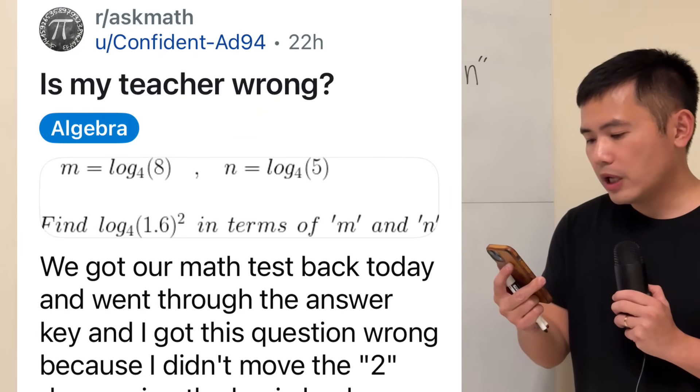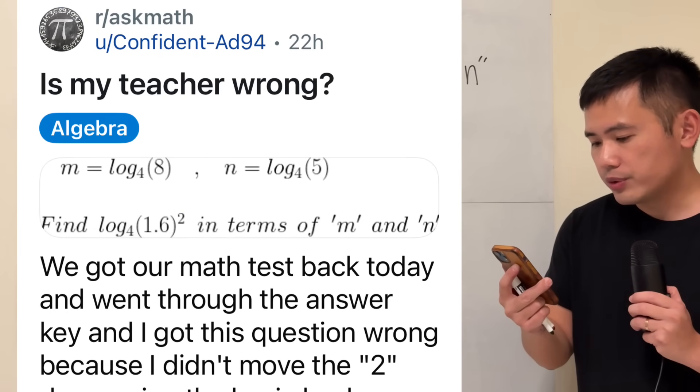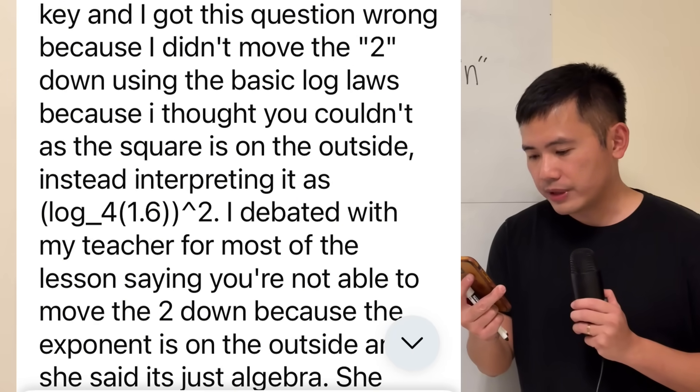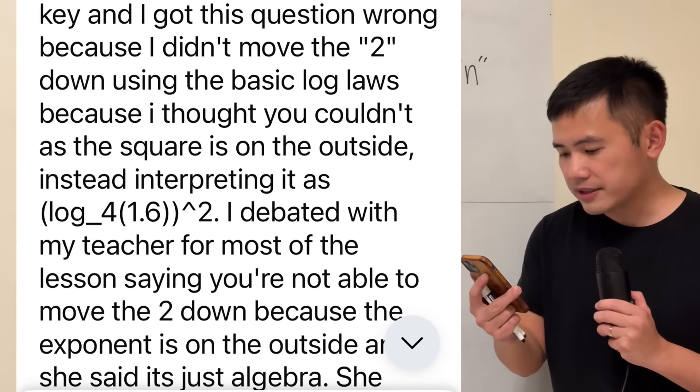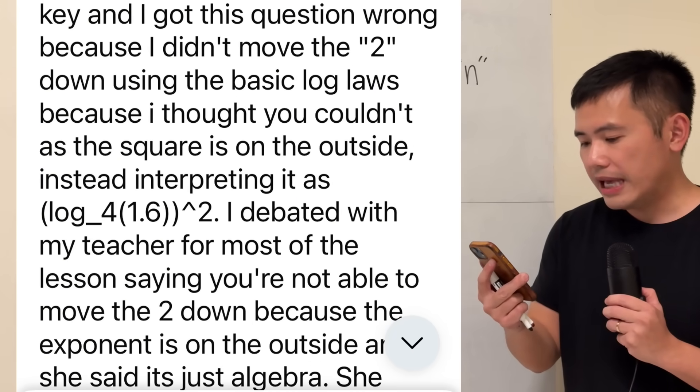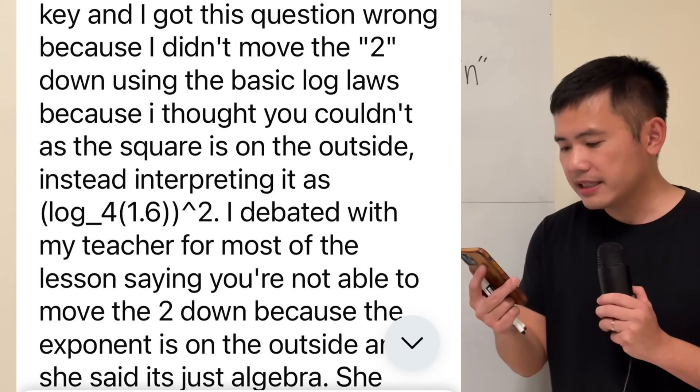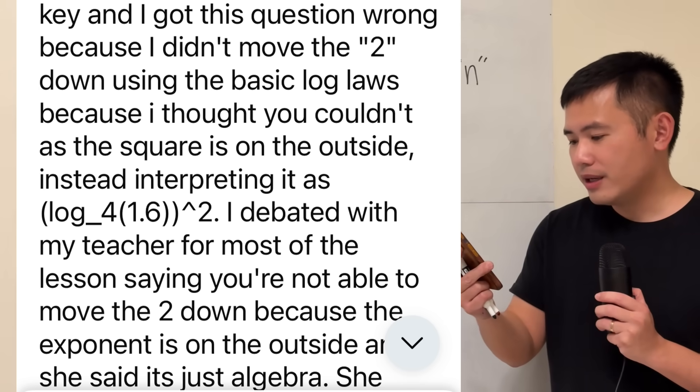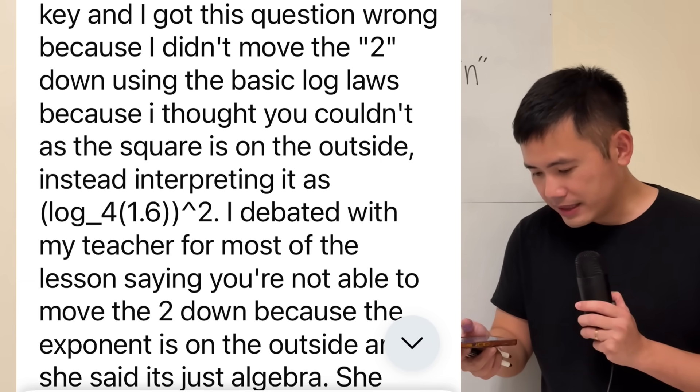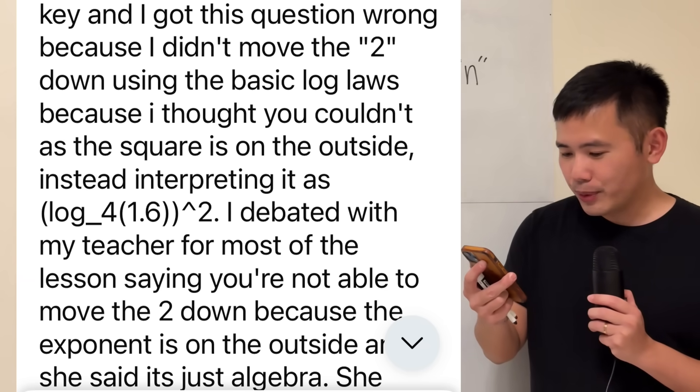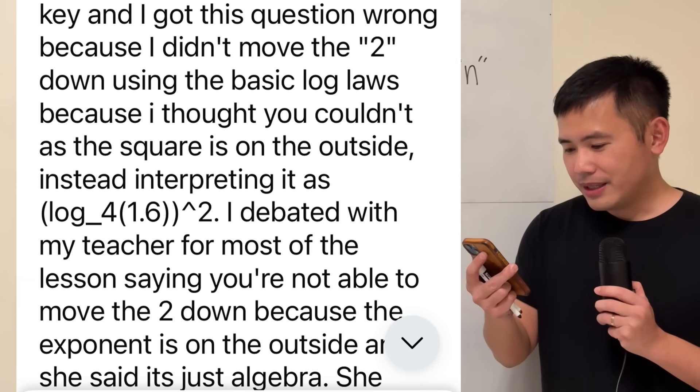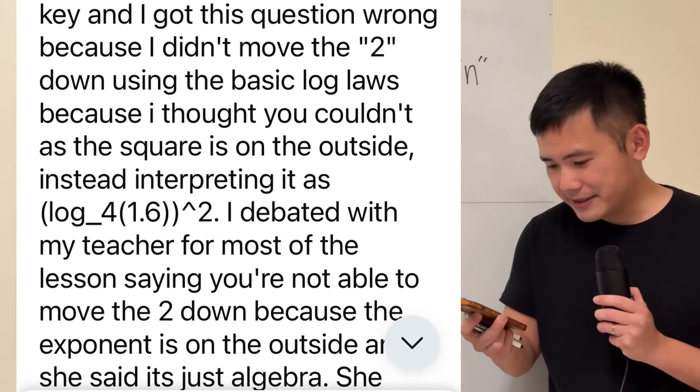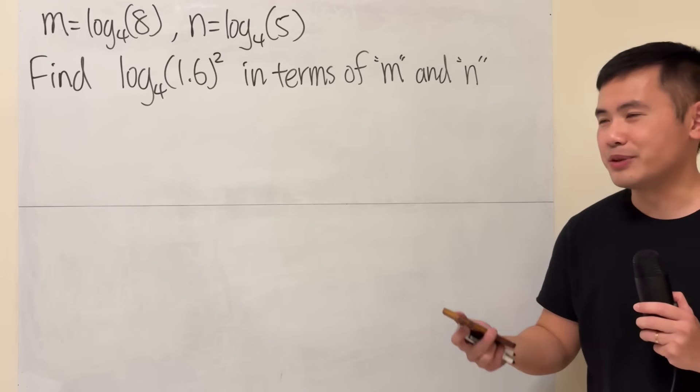We got our math test back today and went through the answer key, and I got this question wrong because I didn't move the two down using the basic log laws. I thought you couldn't as the square is on the outside, instead interpreting it as the whole thing squared. I debated with my teacher for most of the lesson, saying you are not able to move down the two because the exponent is on the outside, and she said it's just algebra.